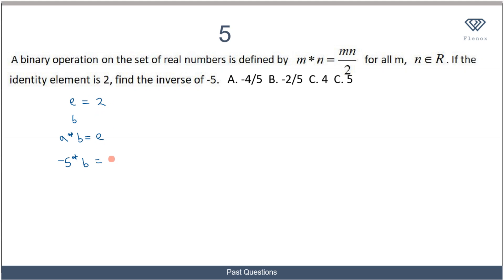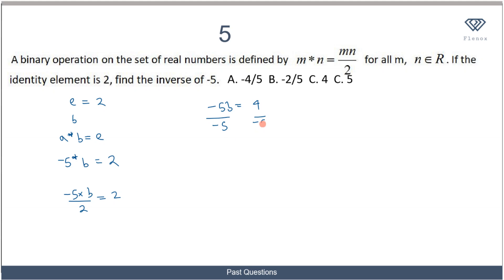Using the formula m★n = mn/2, we get -5★b = (-5 × b)/2 = 2. So -5b = 4 (cross-multiplying), and dividing both sides by -5 gives b = -4/5. So the inverse element is -4/5, which is option A.